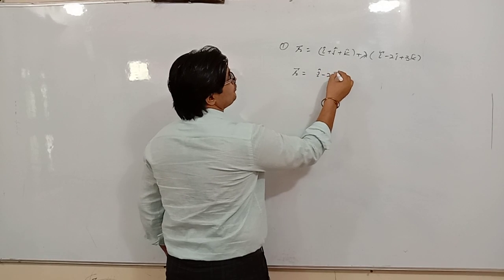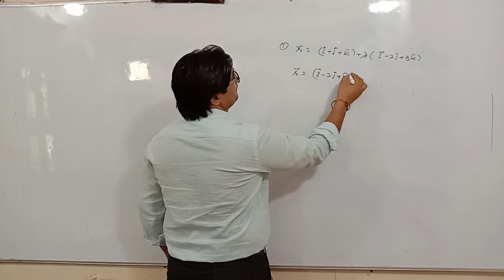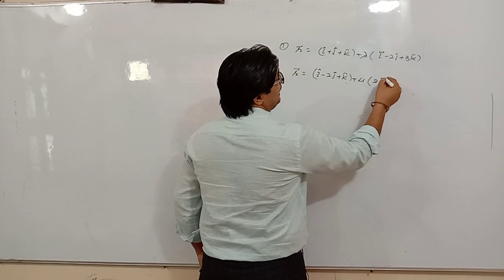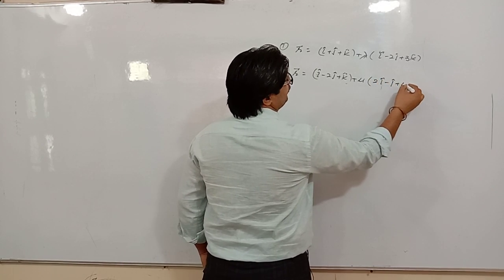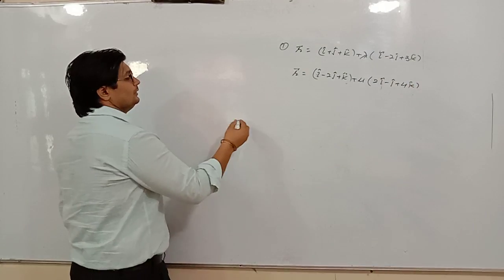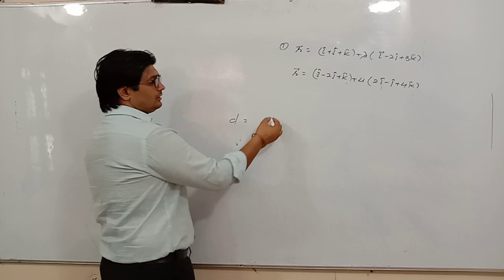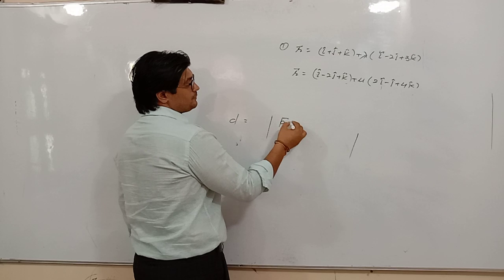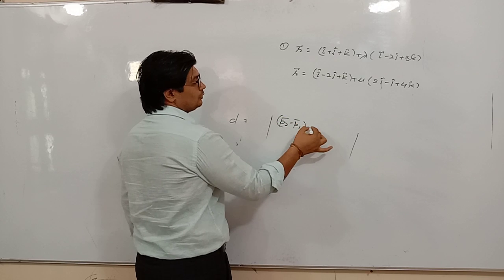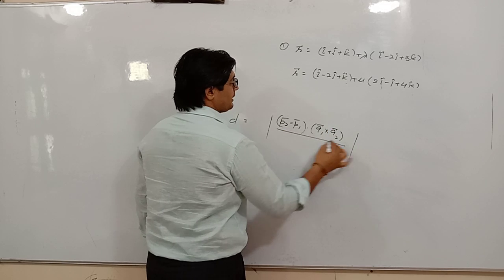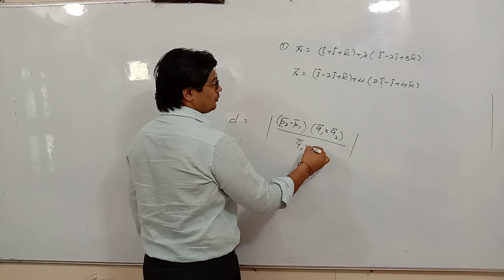(i - 2j + k) + μ(2i - j + 4k). These are the two straight lines and we have to find the shortest distance between them. So the formula for shortest distance is: modulus of (P2 - P1) dot (Q1 cross Q2), all divided by magnitude of Q1 cross Q2.